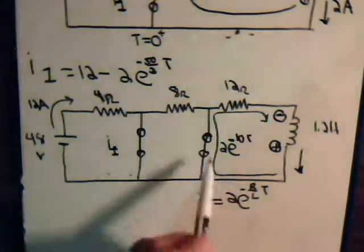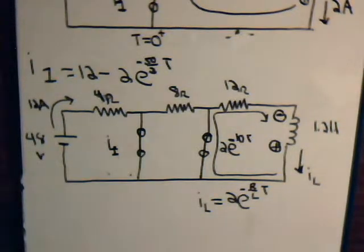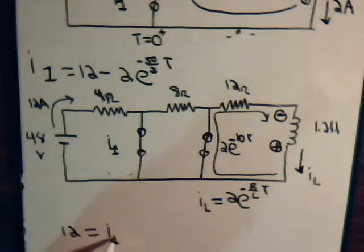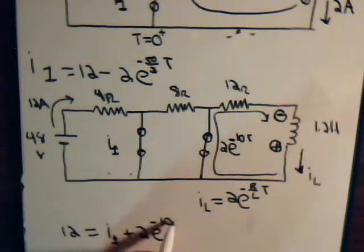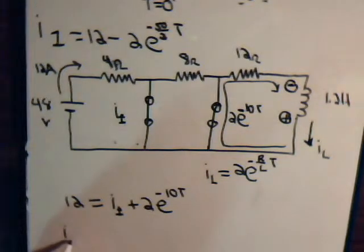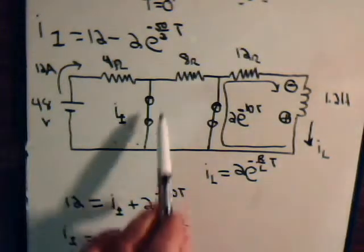Current over here, IL, just goes all the way around like this. So we have 12 equals I1 plus that decay current, which is this. Or I1 equals 12 minus the decay current. And that's what this is.